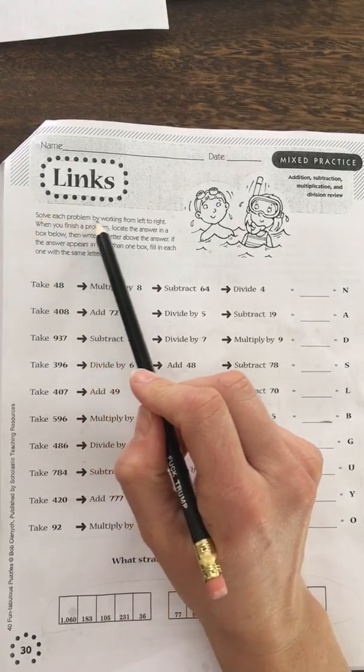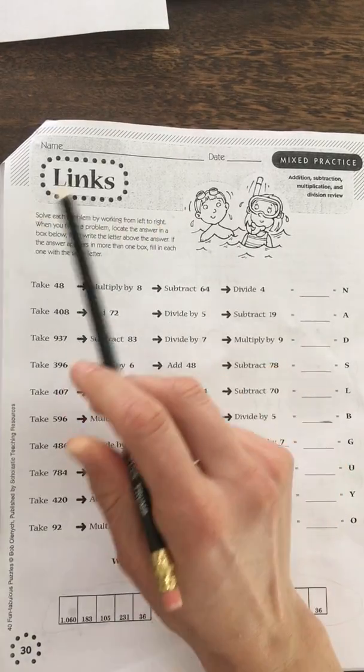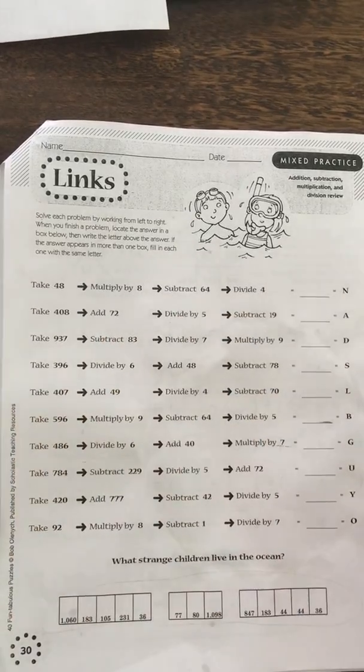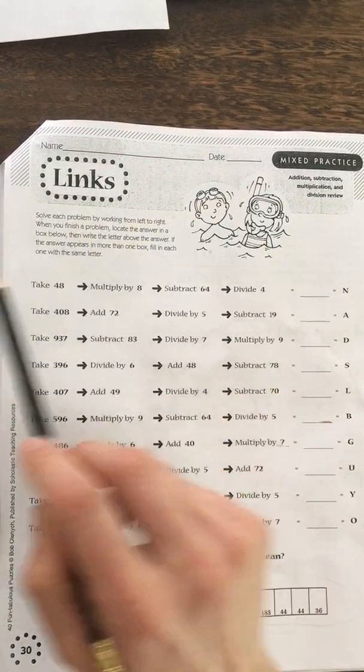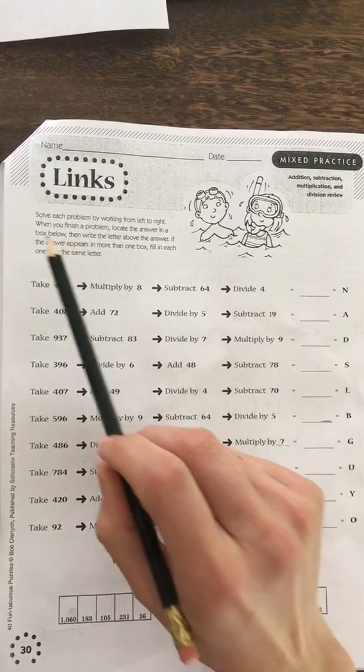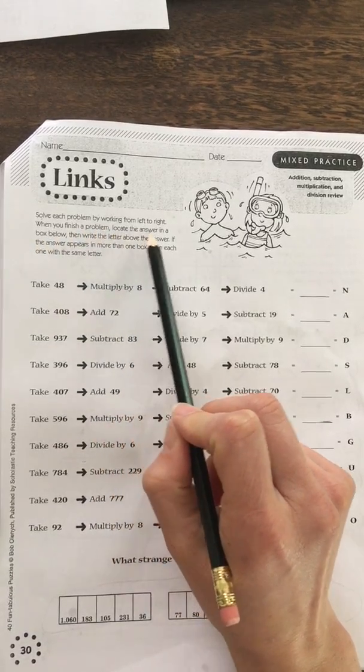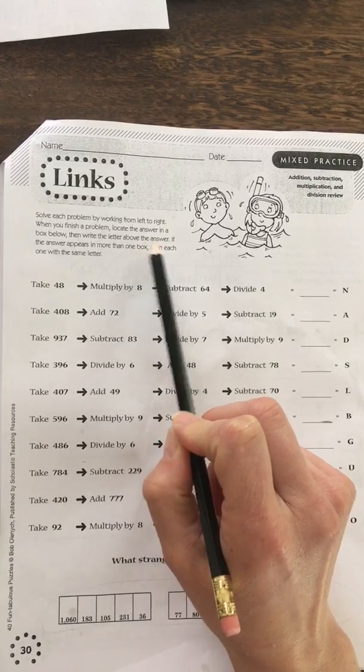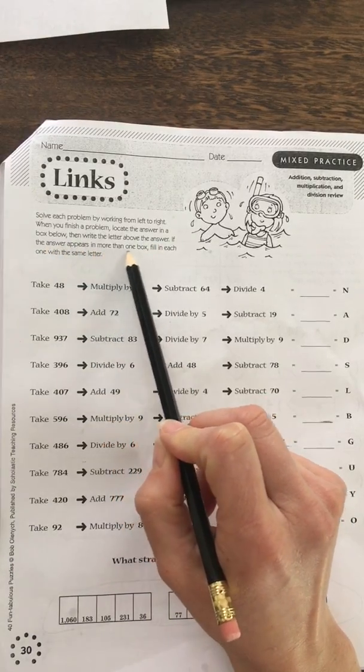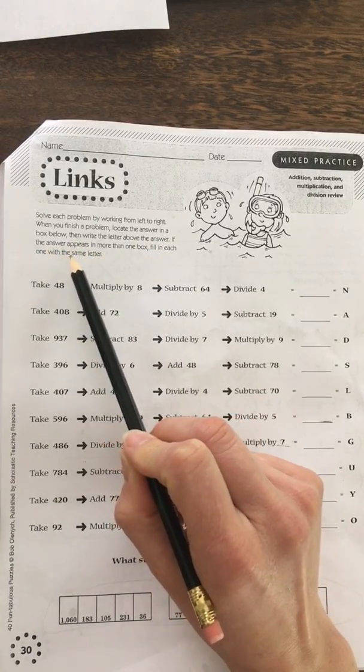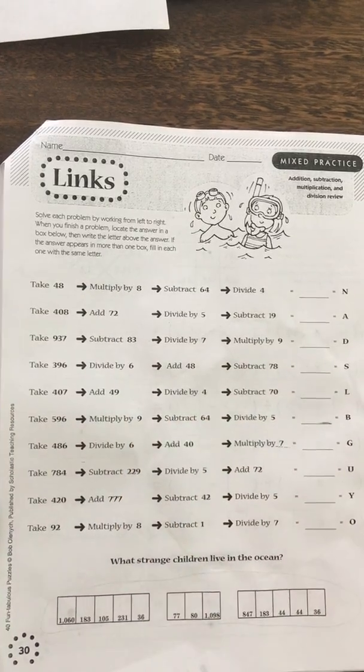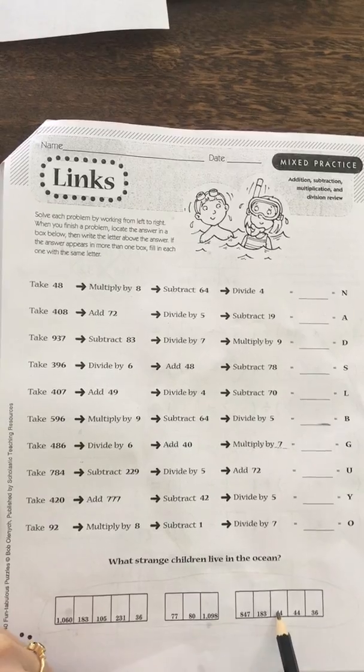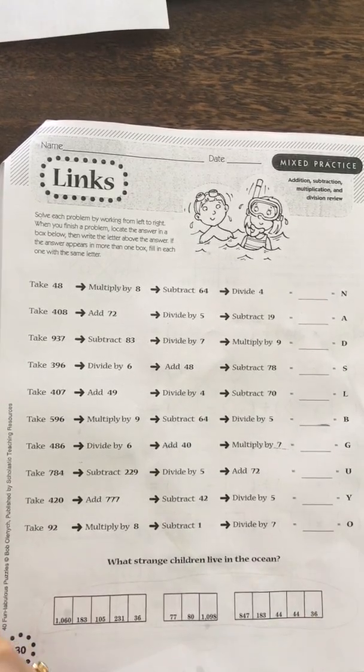This question says solve each problem by working from left to right. So left to right, make an L with your hand, starts over here and then to right is the same way that we read. When you finish a problem locate the answer in a box below, then write the letter above the answer. If the answer appears in more than one box, fill in each one with the same letter. For example, if you get the answer 44, we have two boxes with it so we'll put that letter in both.